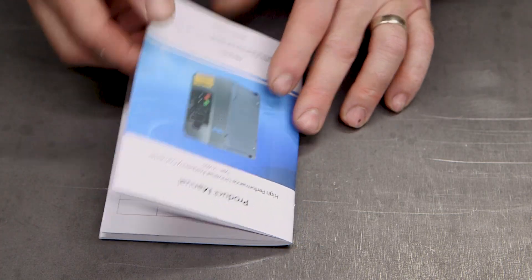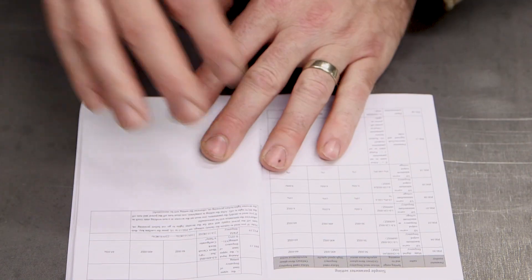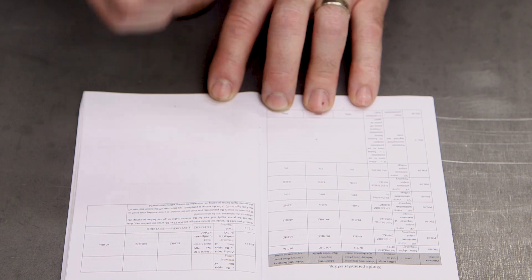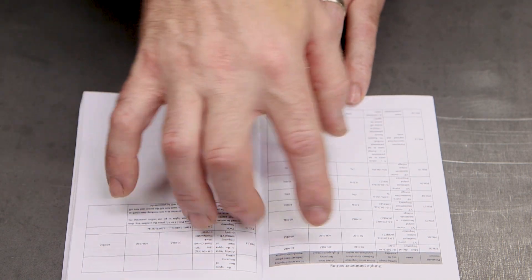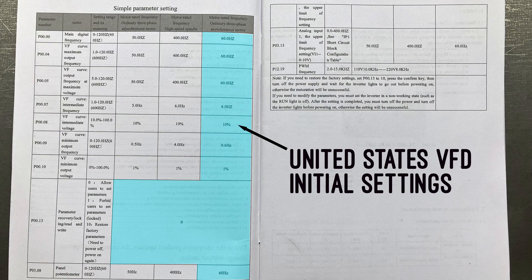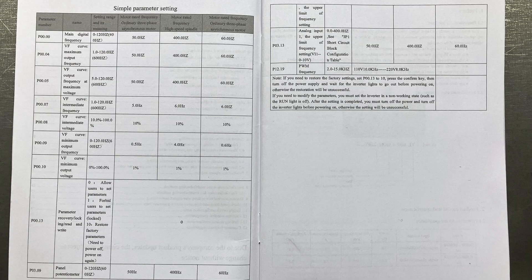So one thing this manual provides that I have not seen with other manuals, other VFD manuals, is it provides a simple list of settings you need to adjust to get your machine up and running. So for us, we want to change all of these settings to match our US power. So I will put a list of these, a screen capture of this on the screen, so you can see what these are.